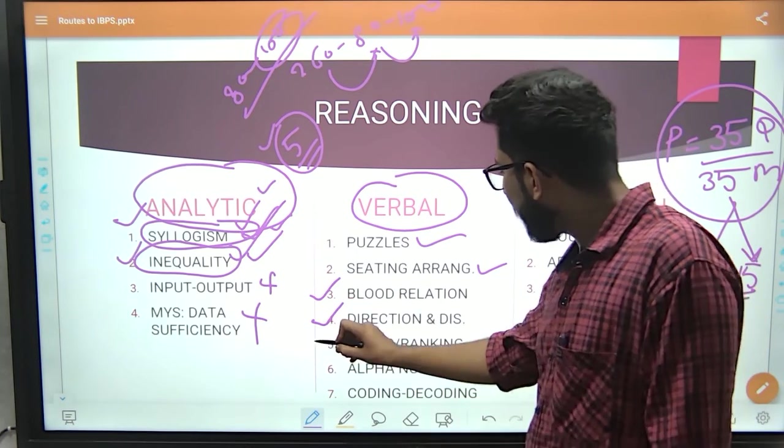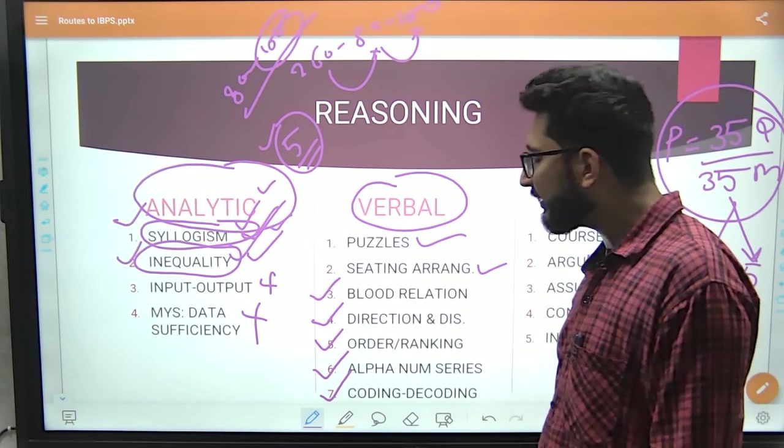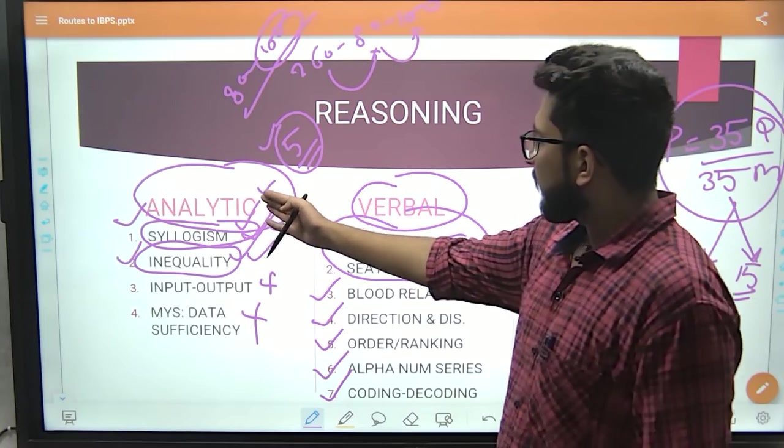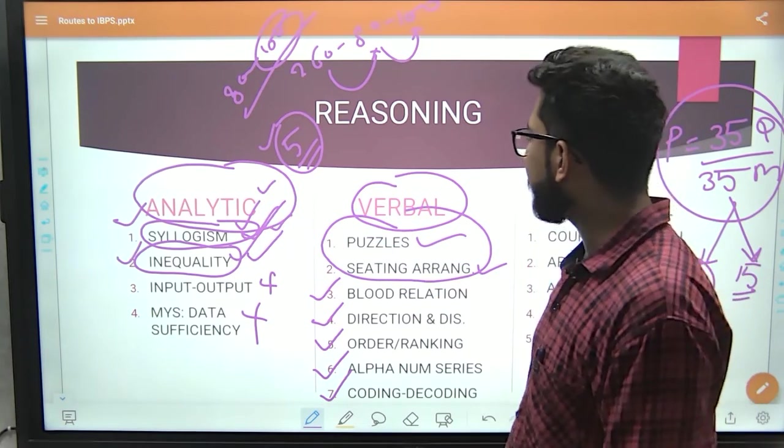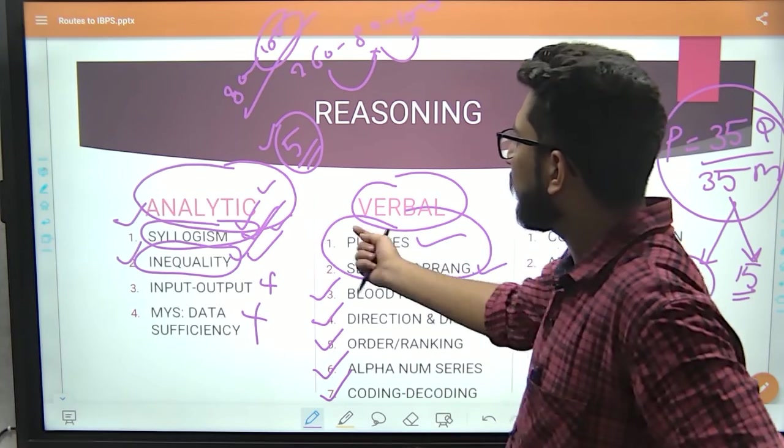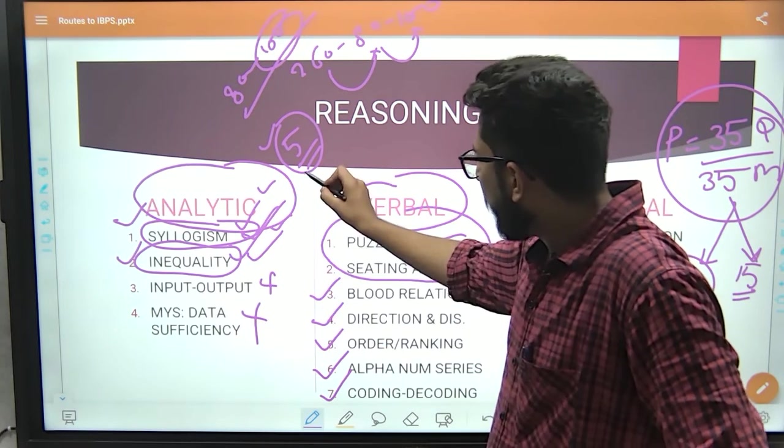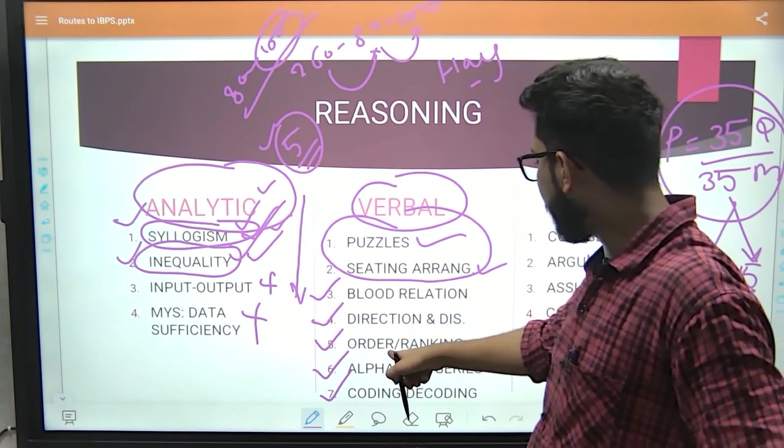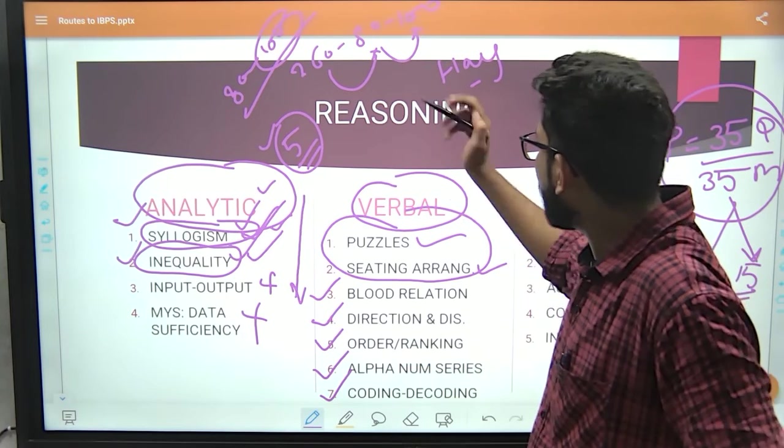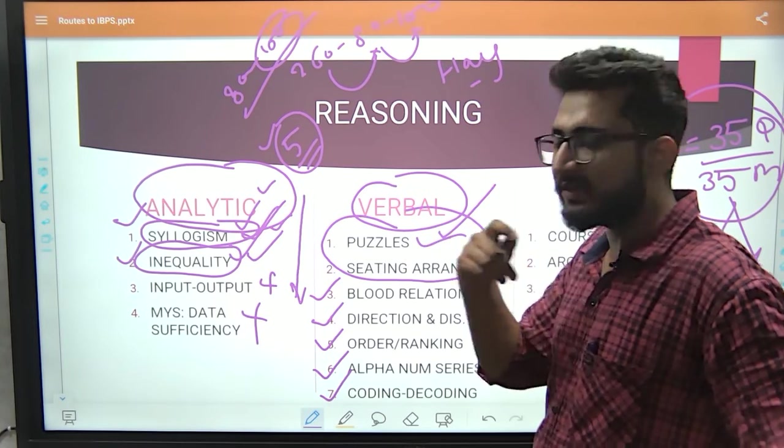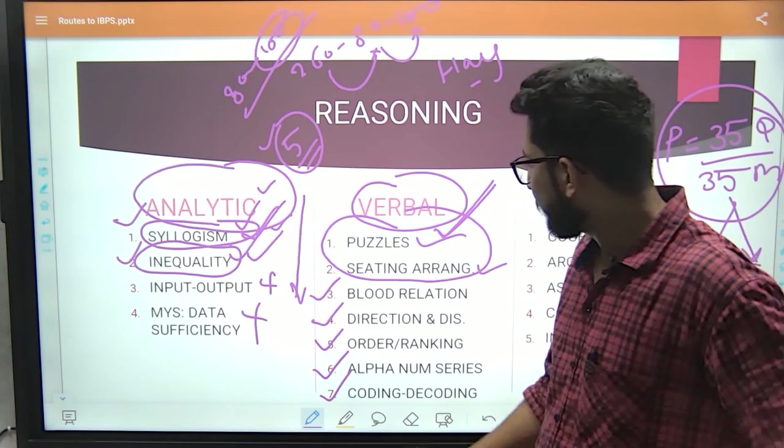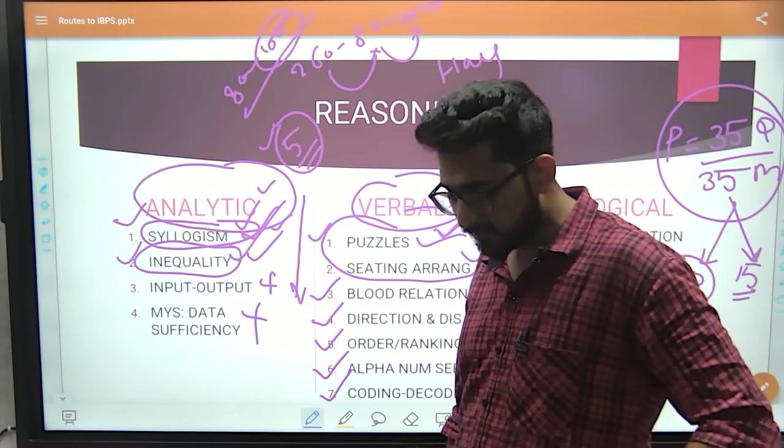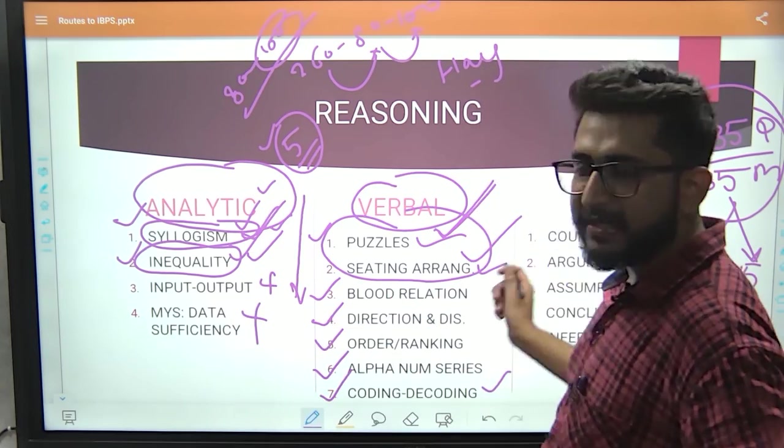Then direction distance, then order ranking, then alphanumeric series, then coding decoding and puzzle and sitting arrangement. So reasoning is divided into two parts actually - puzzle and sitting arrangement is 20 questions, heavy-weighted and the rest of the chapters, we have 15 questions. So you have to give half portion of your day to these topics like syllogism, inequality, blood relation, direction, order ranking, alphanumeric series, coding and decoding. Now half portion left. From the very first day, you have to prepare puzzles, sitting arrangement. When you have these 6 topics finished, then puzzle and sitting arrangement will be finished.